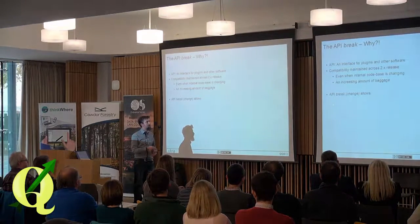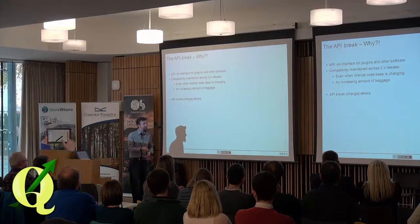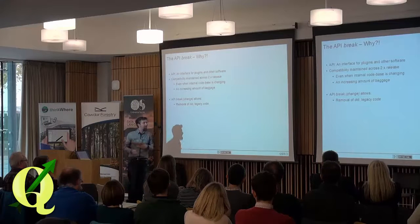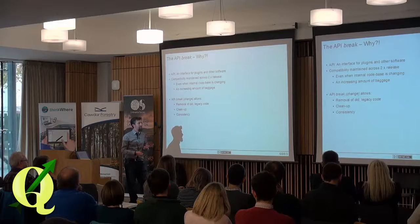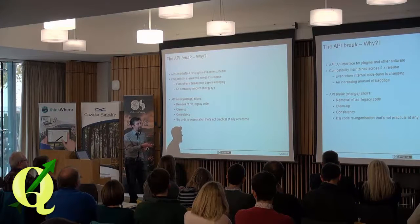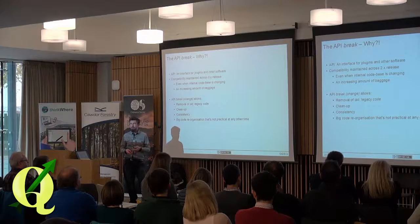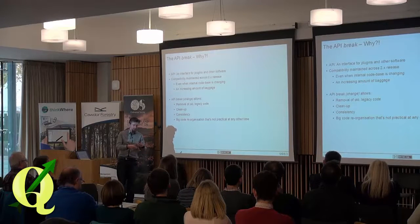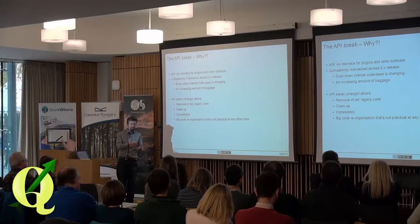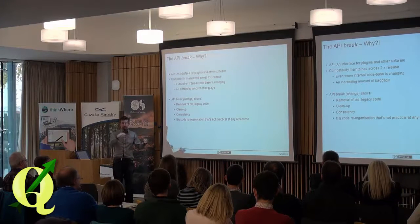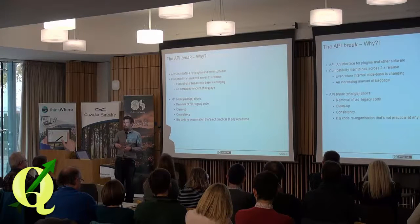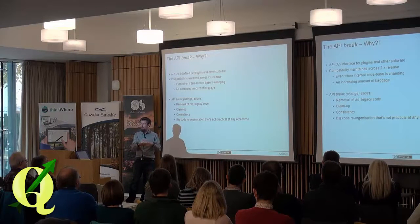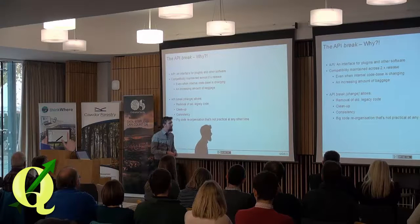This basically means you have an increasing amount of code baggage behind you on the project. The project becomes more complicated as the API changes, but you still need to provide this non-changing interface point. So the API break — basically the API change — means that across this big version change, we can remove old legacy code that's been forming as baggage, do a general cleanup, make things consistent, and handle any huge reorganizations that just wouldn't be practical at any other time. This means that at each major code revision, we still have maintainable software going forward, instead of five or six years later trying to maintain a whole bunch of spaghetti code.